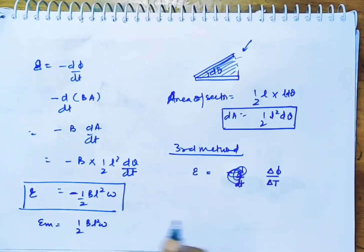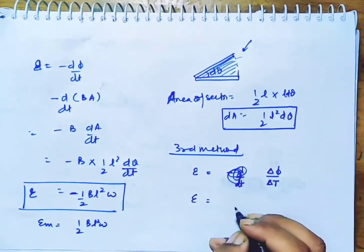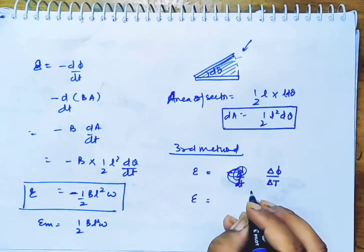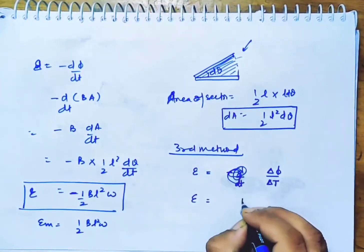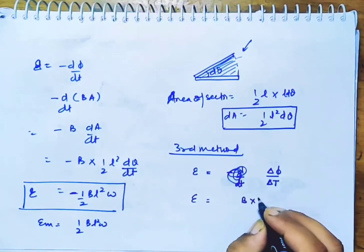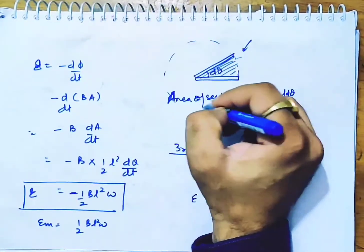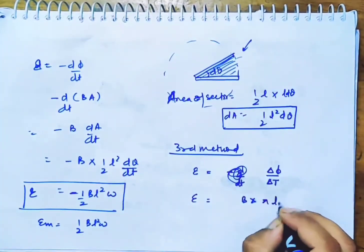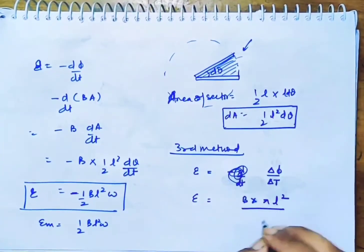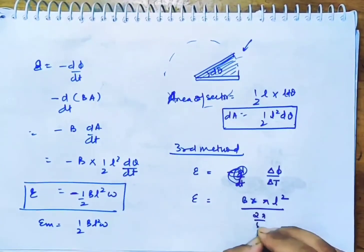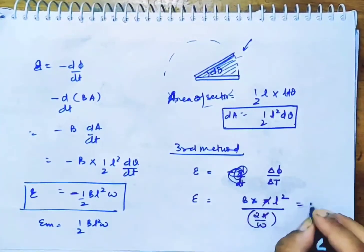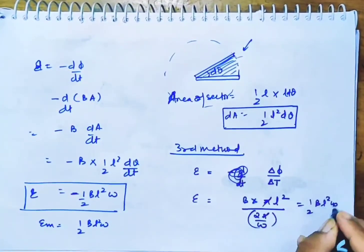I am taking one time period. In this time period, the flux is B into the area. One time period upon time period, which is 2 pi by omega. One single time period - this is the answer: half B L square omega.